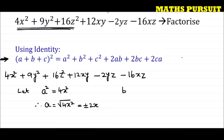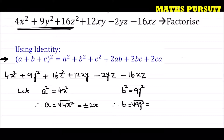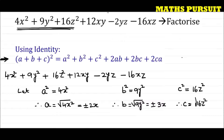Now let us assign b² = 9y². Therefore b = √(9y²) = ±3y. We will come back to this. Similarly, let c² = 16z². Therefore c = √(16z²) = ±4z.